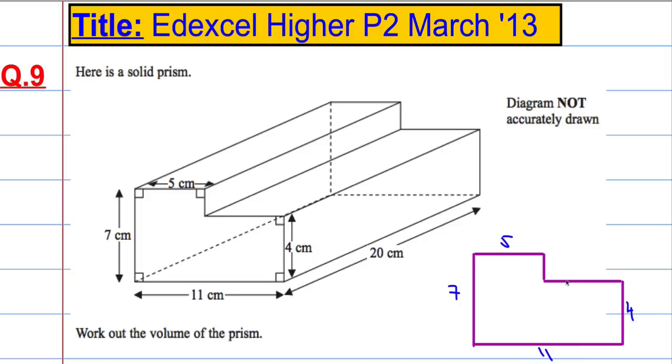Now before I proceed, I'd like to know what these two sides are. If this is 11 and the top is 5, this part must be 6, because 5 plus 6 is 11. If that's 7 and that's 4, well then this little part here must be 3, because 4 plus 3 is 7.